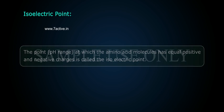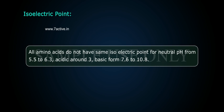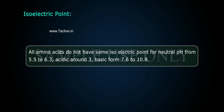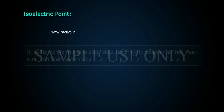All amino acids do not have the same isoelectric point. For neutral amino acids, the isoelectric point is in the pH range of 5.5 to 6.3; for acidic amino acids, around 3; and for basic amino acids, from 7.6 to 10.8.